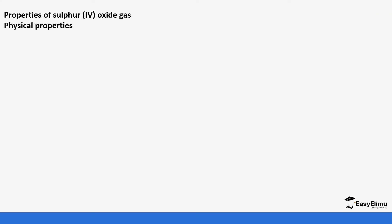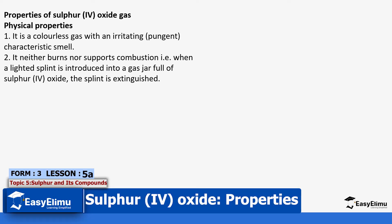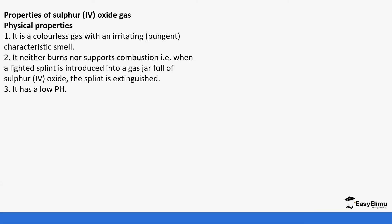Some of the physical properties of sulfur dioxide are that it has a pungent, characteristic irritating smell. This irritating smell is due to the acidic property of sulfur dioxide. It does not support combustion, nor does it burn, so when a lighted splint is introduced into a jar full of sulfur dioxide, the splint is extinguished. It has a very low pH, which tells us that it is acidic in nature.